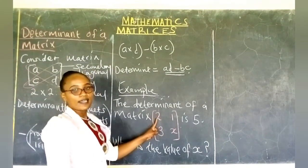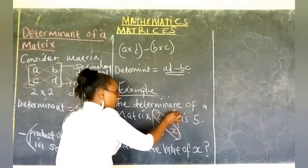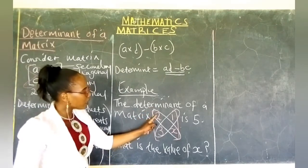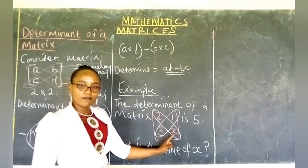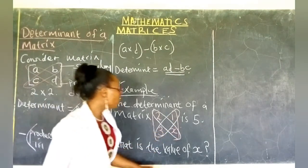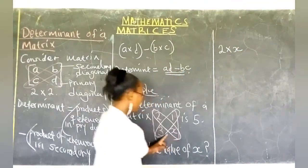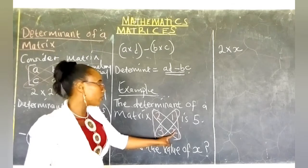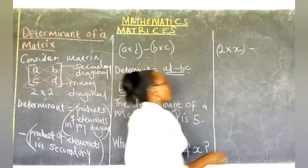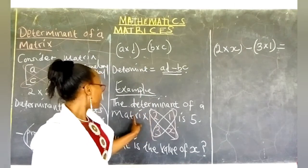The main diagonal or the primary diagonal is this one. To find the determinant, we are going to find the product of elements in the primary diagonal, subtracting the product of elements in the secondary diagonal. So we are going to take 2 times X — that is 2 times X, elements in the primary diagonal — and subtract the product of elements in the secondary diagonal, that is 3 times 1. This should give us 5, because we are told that the value of the determinant is 5.